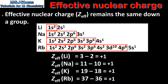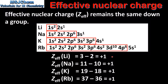Next we look at the effective nuclear charge down a group. The effective nuclear charge remains the same down a group in the periodic table. Here we have the electron configurations of the first 4 elements in group 1. If we calculate the effective nuclear charge we can see that it remains the same down the group. Although the effective nuclear charge stays the same, the ionization energy decreases due to the increase in atomic radius.